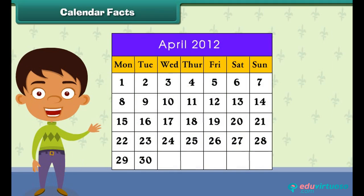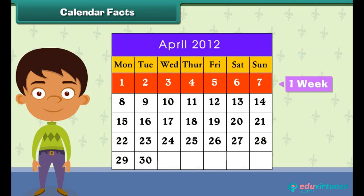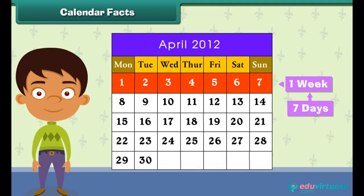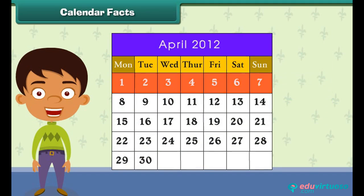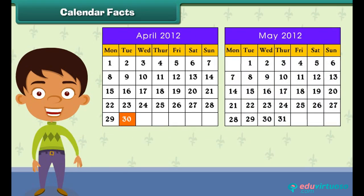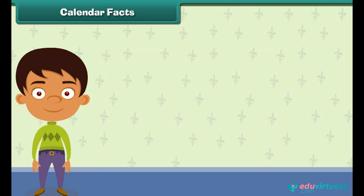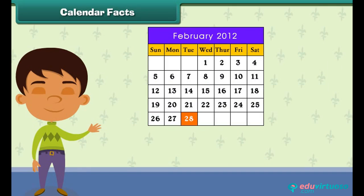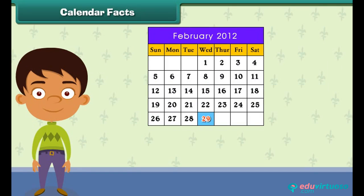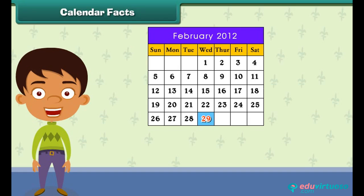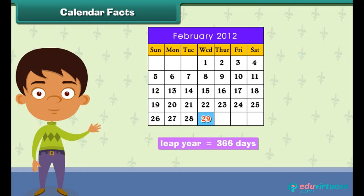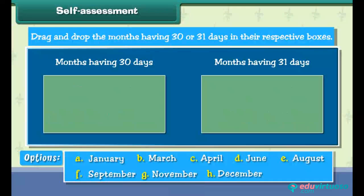Each month is divided into weeks. One week has 7 days, from Monday to Sunday. Each month has 30 or 31 days. Only February has 28 days. In a leap year, one extra day is added in the month of February. Therefore, a leap year has 366 days.